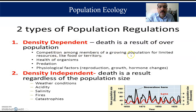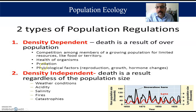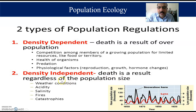Density-dependent factors result from overpopulation — specifically competition among members of a growing population for limited resources like food or territory. Physiological factors such as reproduction, growth, and hormone changes in the population are also called density-dependent factors. The key point is that death as a result of overpopulation is density dependent, while density-independent death occurs regardless of population size.